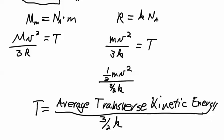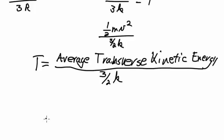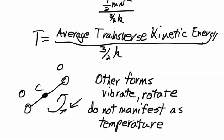Now there might be other forms of kinetic energy inside the gas. For instance, carbon dioxide is going to have a carbon in the middle and two oxygen atoms on the side, and it may spin or vibrate, and so it will store energy in other forms, such as vibrational or rotational, but those other forms do not manifest themselves as temperature. Only the transverse kinetic energy manifests itself as temperature.